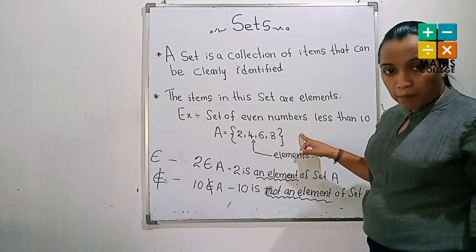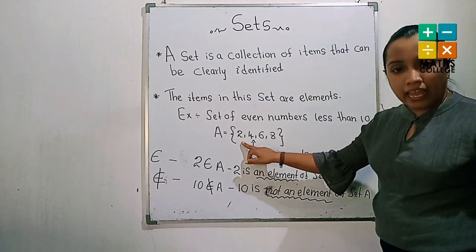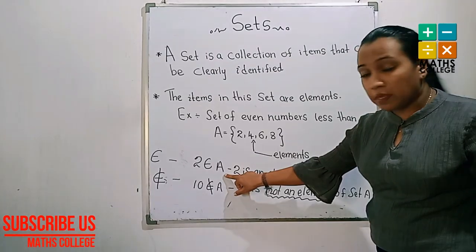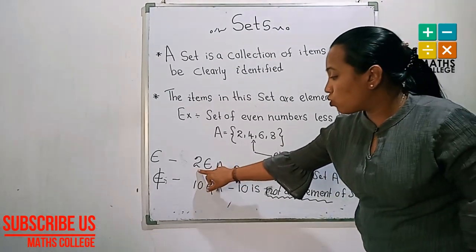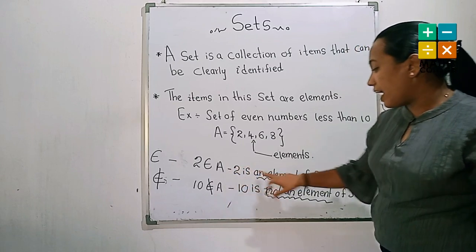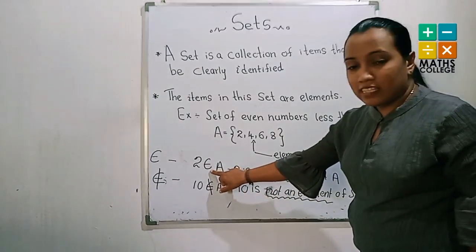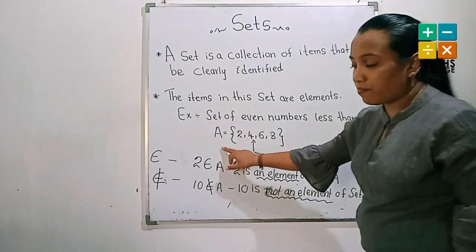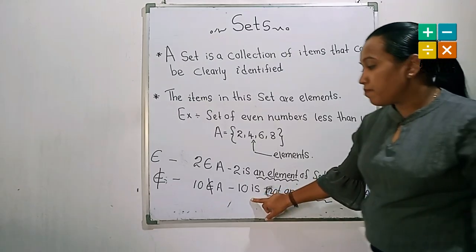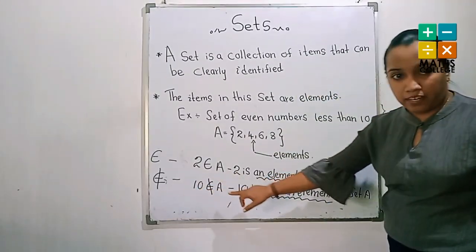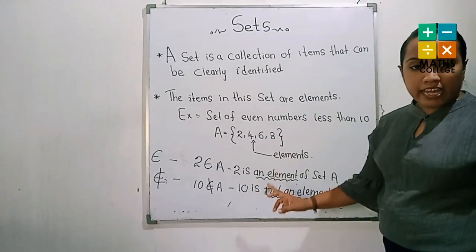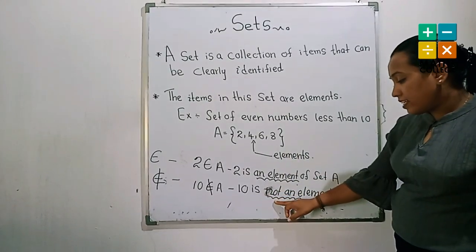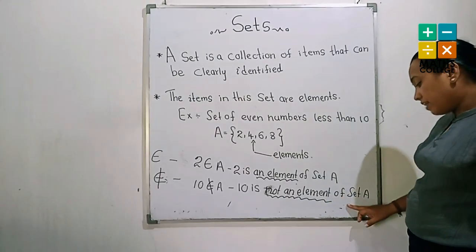Considering the above example: 2 is an element of set A. It can be represented in symbolic form using the element symbol — 2 is an element of set A, meaning element belongs to set A. Another example using the 'not an element' symbol: 10 does not belong to this set. Therefore, 10 is not an element of set A.